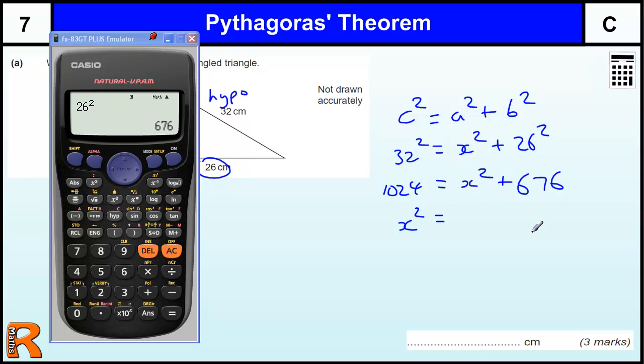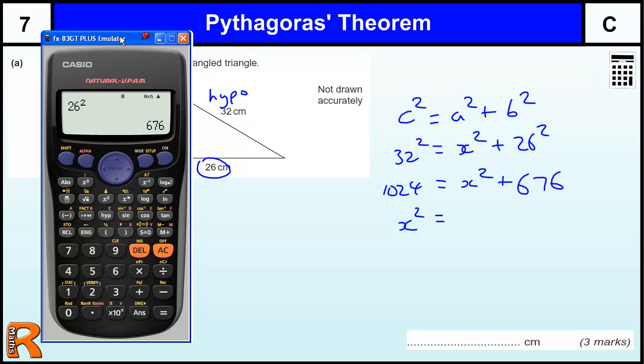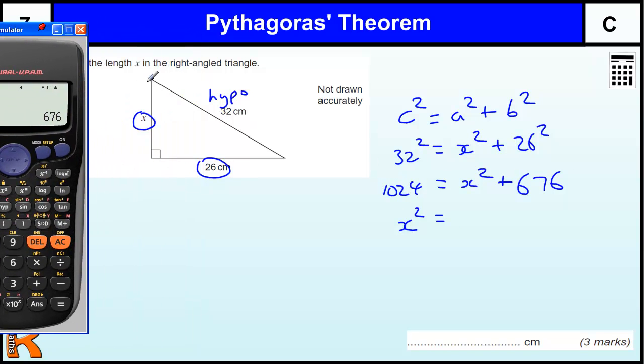So to find x squared, now again this is a common mistake, is to add these two to get the total and then do the square root, but we must subtract. We're trying to find one of the short sides, so it can't be bigger than 32, that's your bigger side. So this must be smaller, so we must be taking it away.